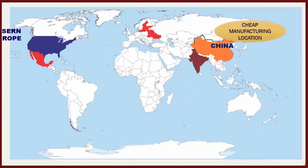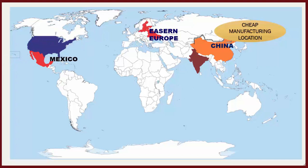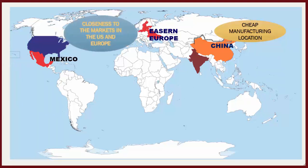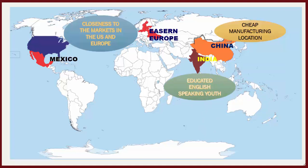Mexico and Eastern European countries are useful for their closeness to the markets in the US and Europe. Our country India has educated, English-speaking youth who can provide customer care services. By this, the cost savings for the MNCs can be 50–60%, and there are many advantages for the MNCs in spreading out production across borders.